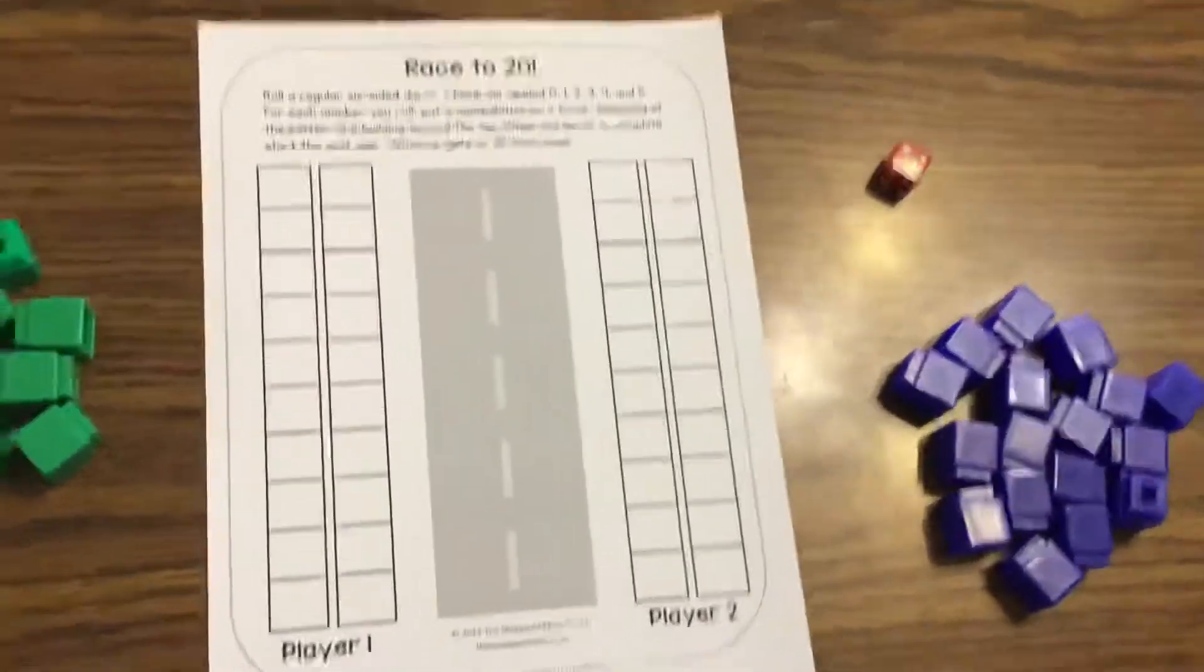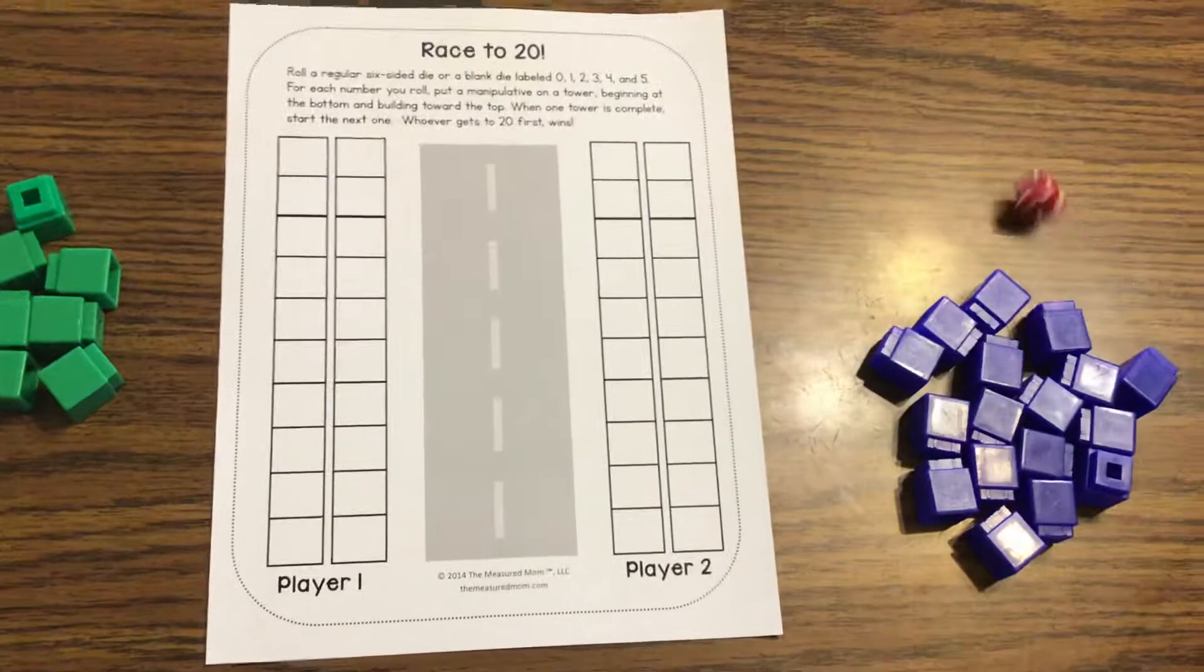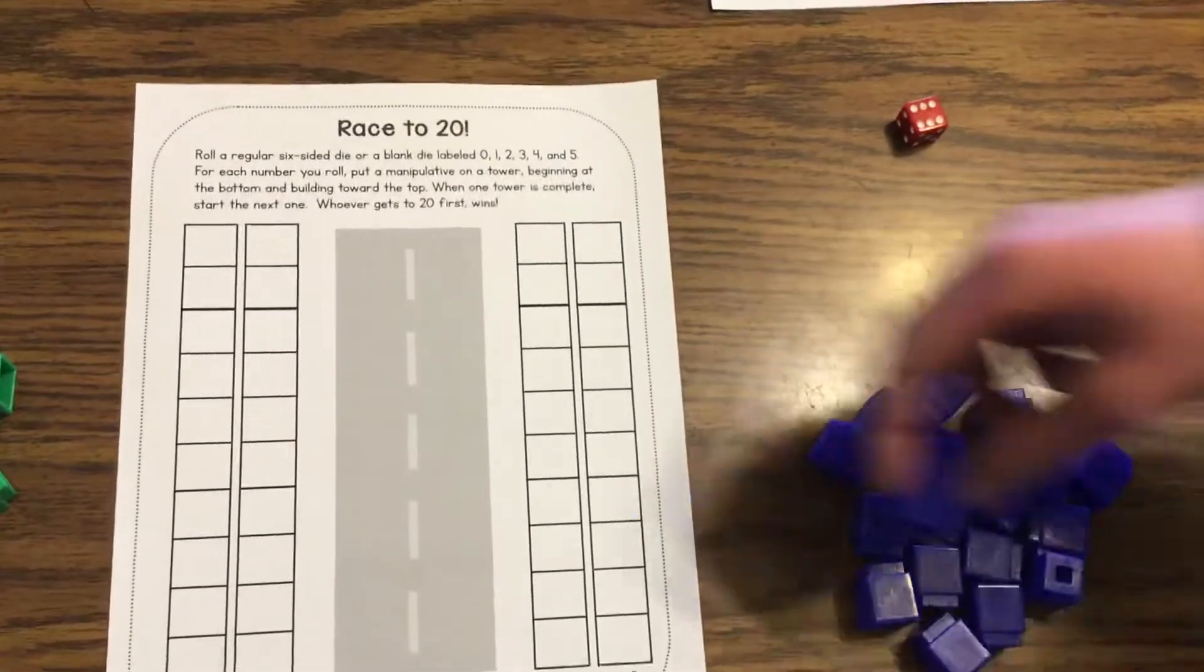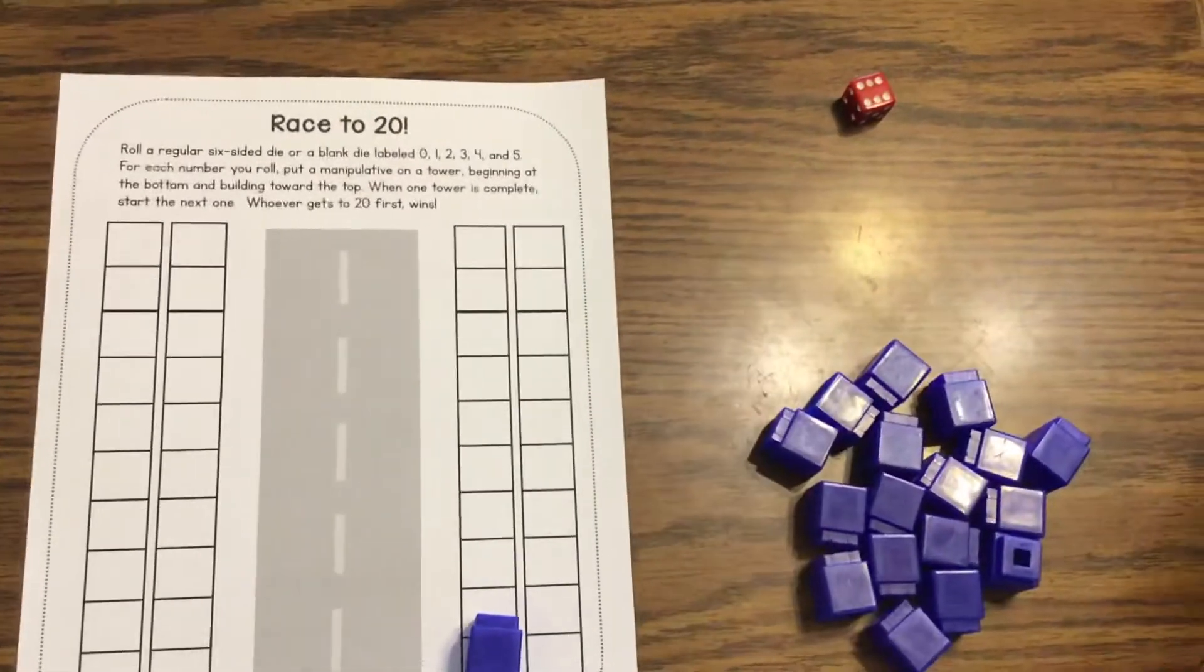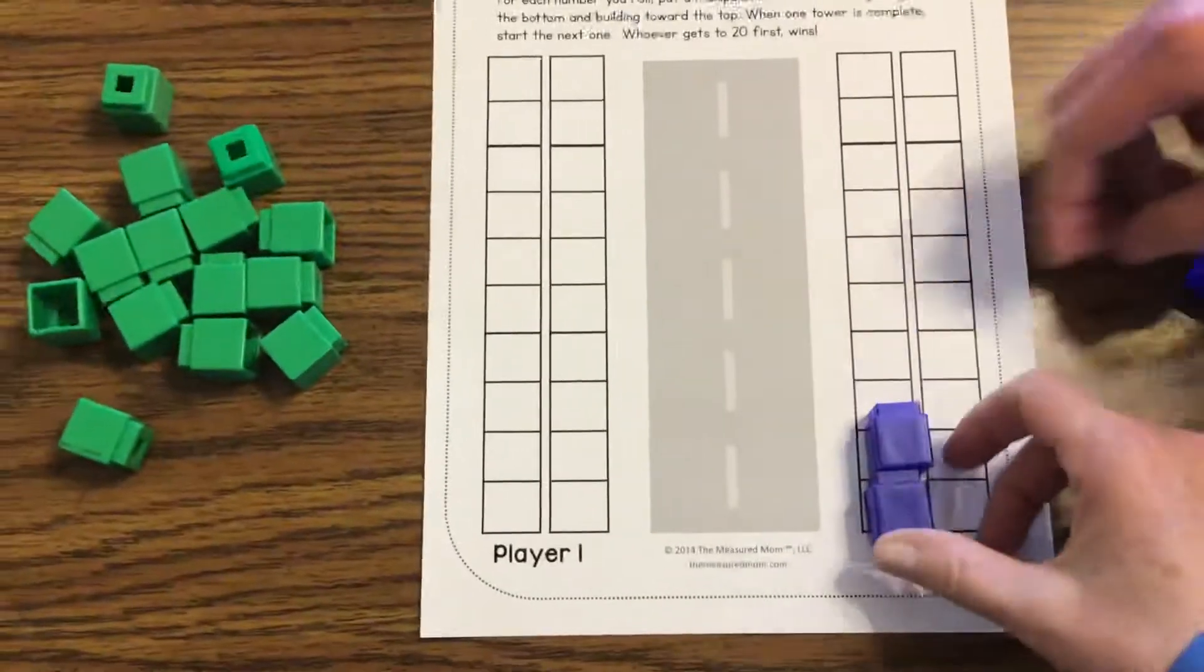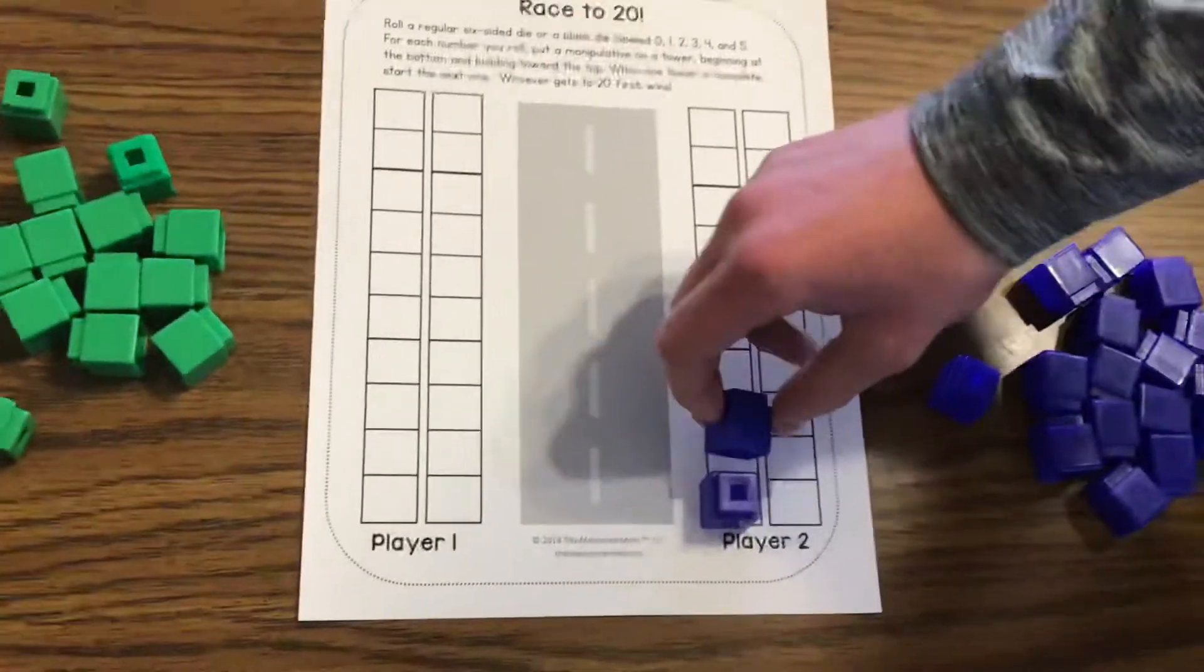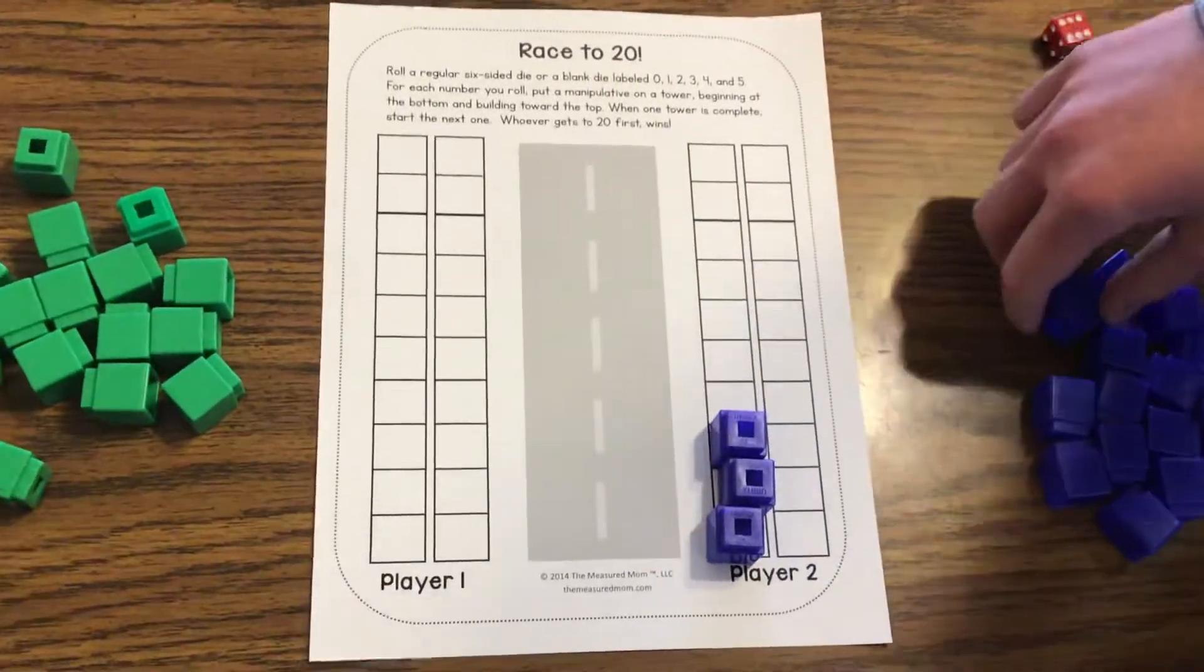So Patrick's going to go first and Patrick's going to roll the dice. How many did Patrick get? Six. Okay, so Patrick's going to have six. Patrick, you could stand them up, please. Okay, so Patrick's got six.